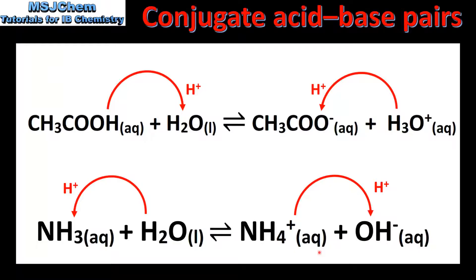In the reverse reaction we can see that the ammonium ion is donating a proton to the hydroxide ion, which is accepting the proton. So in the reverse reaction the ammonium ion is acting as a Bronsted-Lowry acid and the hydroxide ion is acting as a Bronsted-Lowry base.